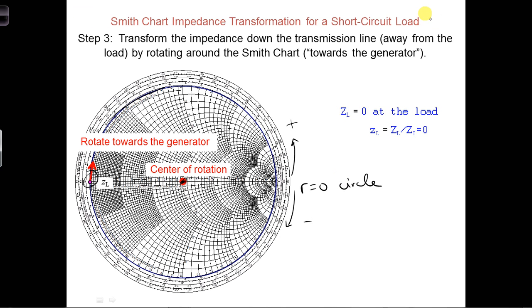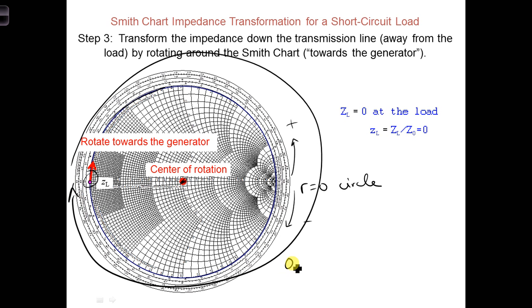The values start to repeat once we get all the way around the Smith chart, which corresponds to half a wavelength. So all the way around is 0.5 lambda.